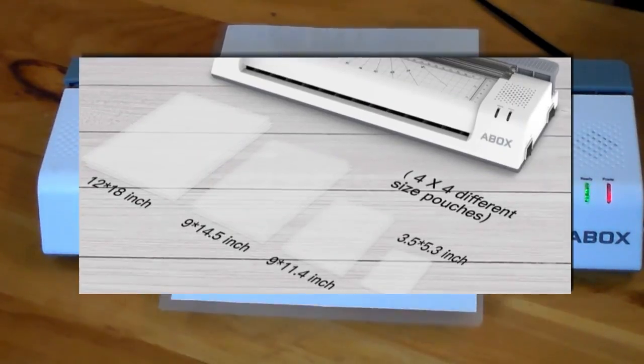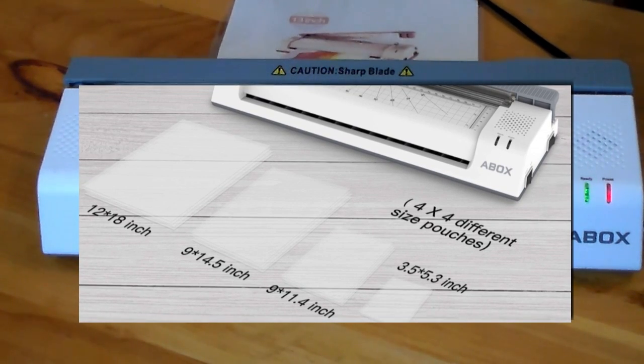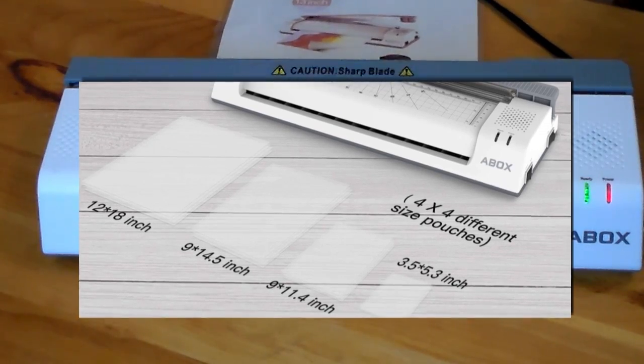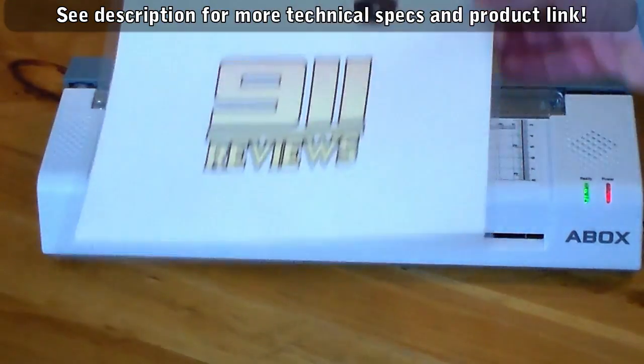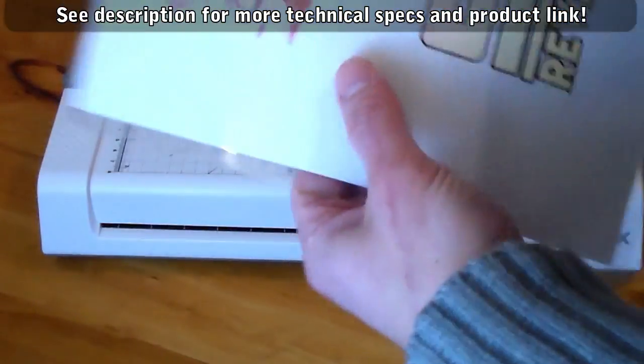Here's a picture of the laminating pouch sizes that come free with the machine. Nice! The machine is super quiet and it's built for even heating to avoid bubbles. Check out the material specs in the description if you'd like more info on that.